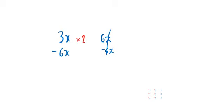Or if I had minus y and 5y, what would I have to multiply one of them by to get something like that? Hopefully you can see that you'd multiply the top one by 5, because remember, minus y and minus 1y are the same thing. So if I multiplied the top one by 5, I'd get minus 5y on top and I'd just get 5y on the bottom. So the bottom wouldn't change.